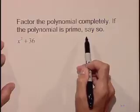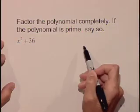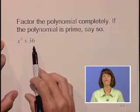Let's factor the polynomial completely. If it is prime, we'll say so. The polynomial is x squared plus 36.